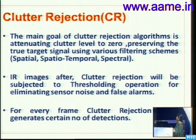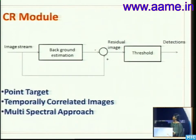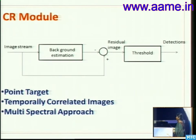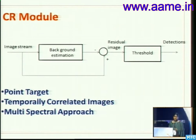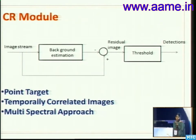For a missile warning system and IRST, the target is considered a point target where intensity is focused mainly on one detector element, giving single pixel detection. The point spread function is defined for this. Temporally correlated images use very high frame rates so the background is considered essentially stationary. This is a major criterion used for background estimation and elimination to reduce clutter levels.